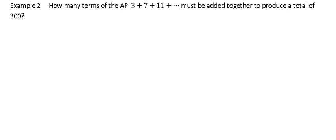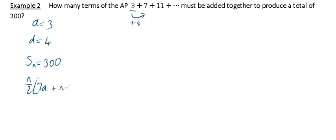Next example: how many terms of the AP 3, 7, 11, ... must be added together to produce a total of 300? Here A = 3, D = 4, and we want S_N = 300. Substituting into the formula: N/2 × (2×3 + (N − 1)×4) = 300, which gives N/2 × (6 + 4(N − 1)) = 300.